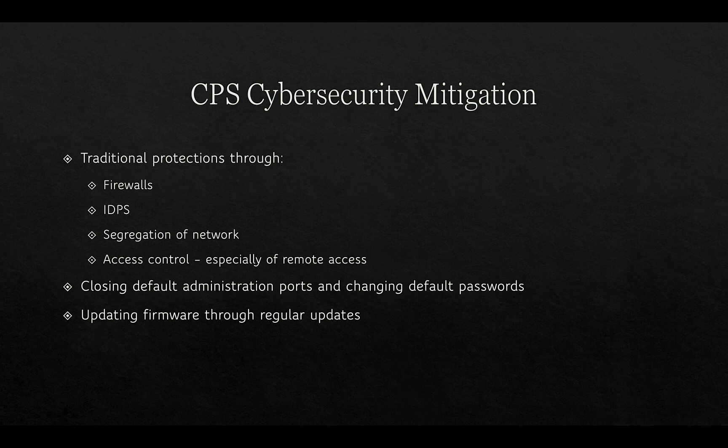In terms of mitigation, traditional protections through firewalls, intrusion detection and protection systems, network segregation, and access control — especially of remote access — is one approach. Closing default administration ports and changing default passwords is part of the hardening process, along with updating firmware through regular updates. If controllers don't need to be connected to the internet, keeping them disconnected is also an effective mitigation strategy.